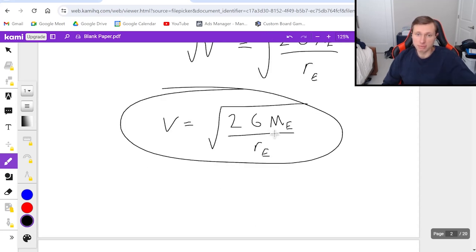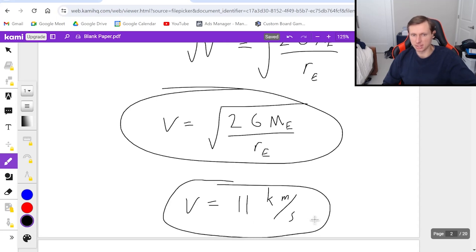And if you were to actually plug in the values for the mass of the Earth and the radius of the Earth, and G is 6.67 times 10 to the minus 11th, you'll actually get an escape velocity of about 11 kilometers per second. So that's how fast the kid threw his baseball. Isn't that incredible?